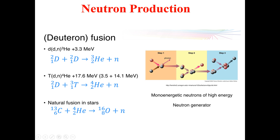In deuteron fusion, we can also get neutrons. What we do is fuse two deuterium nuclei to produce a helium-3 nucleus, along with neutrons. We can also get neutrons during the fusion of deuterium and tritium into helium-4.